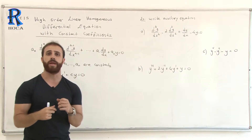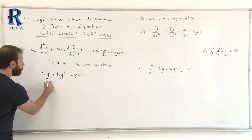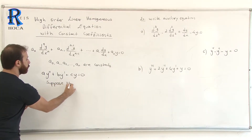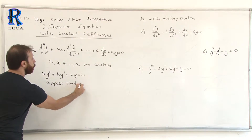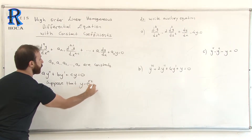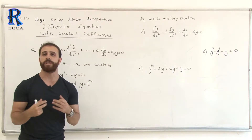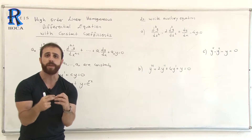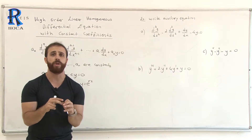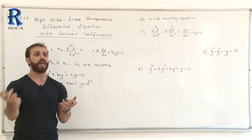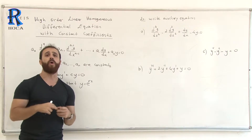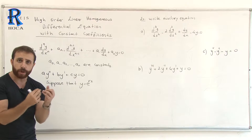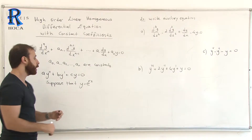To find the auxiliary equation, suppose that y = e^(rx). Using this, I will prove the derivation, but from now on it is not necessary to prove it for every question — we can write it directly. Let's understand the theory behind the auxiliary equation.